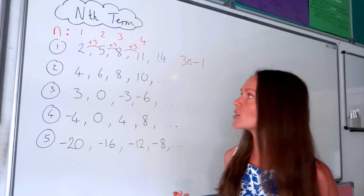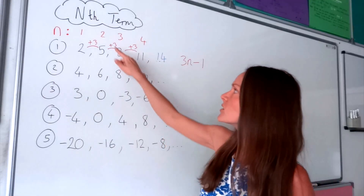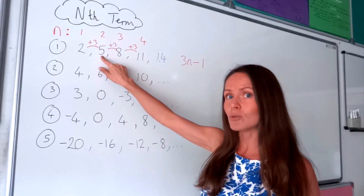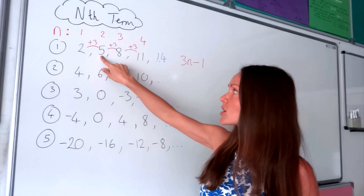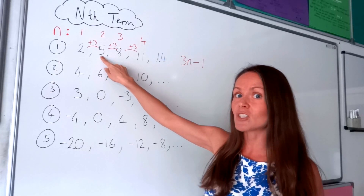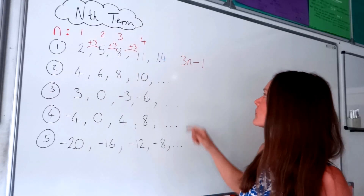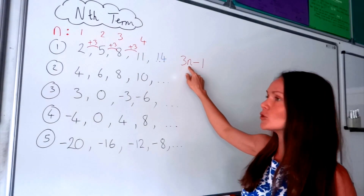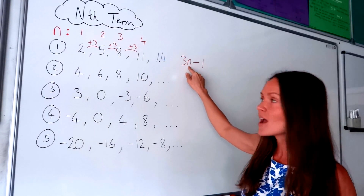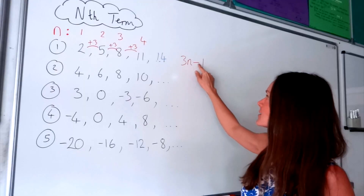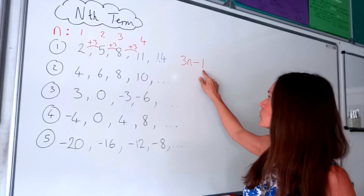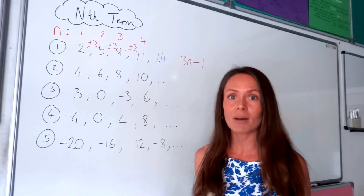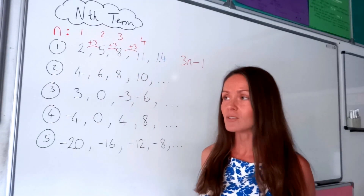Now let's look at the second number in the sequence, so this is when n is 2. I change n to 2 in my formula: 3 multiplied by 2 is 6, and 6 subtract 1 gives me 5, which is the second number in the sequence.